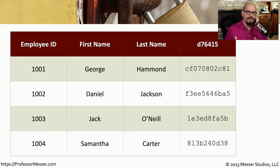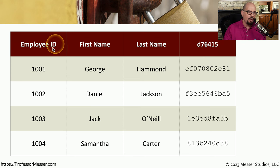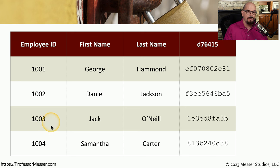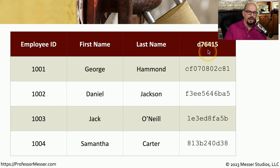One way to avoid some of that overhead is to only encrypt a certain type of data in the database. In this example, we're performing column level encryption where the employee ID, the first name, and the last name are all displayed in plain text. If you needed to search for a name or an ID, you can perform this very quickly without having to decrypt any other data. But if you needed access to a person's social security number, you would need to decrypt the entire column or that single record to gain access to that data.